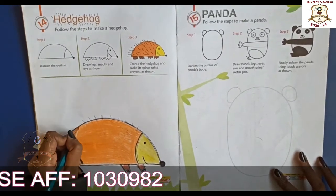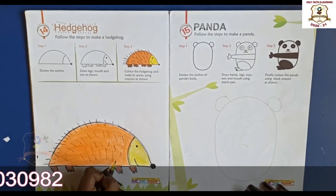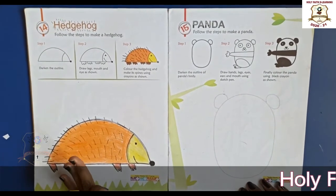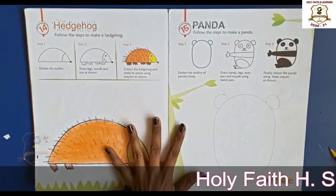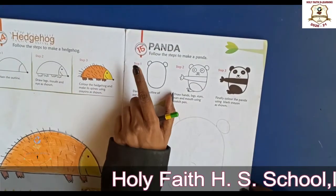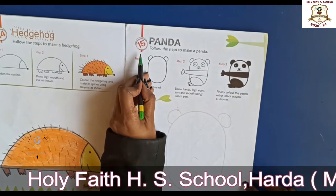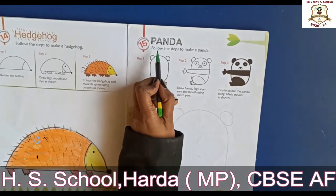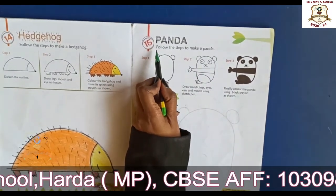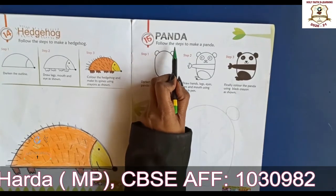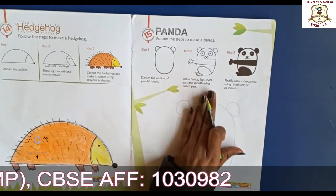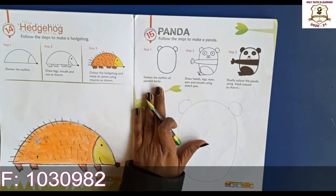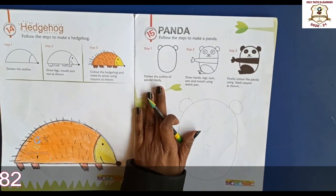Okay student, our activity is done. Now look at chapter number 50. Panda. This is your homework — do this activity as your homework. Take care, bye bye. Thank you.